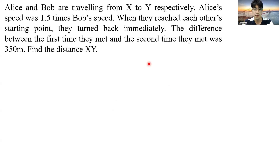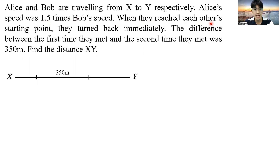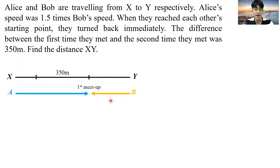Alice and Bob are traveling from X to Y respectively. Alice's speed was 1.5 times Bob's speed. When they reach each other's starting point, they turn back immediately. The difference between the first time they met and the second time they met was 350 meters. Find the total distance of XY. Let me draw this diagram — Alice on the left, Bob on the right — and let's assume they first meet up here.